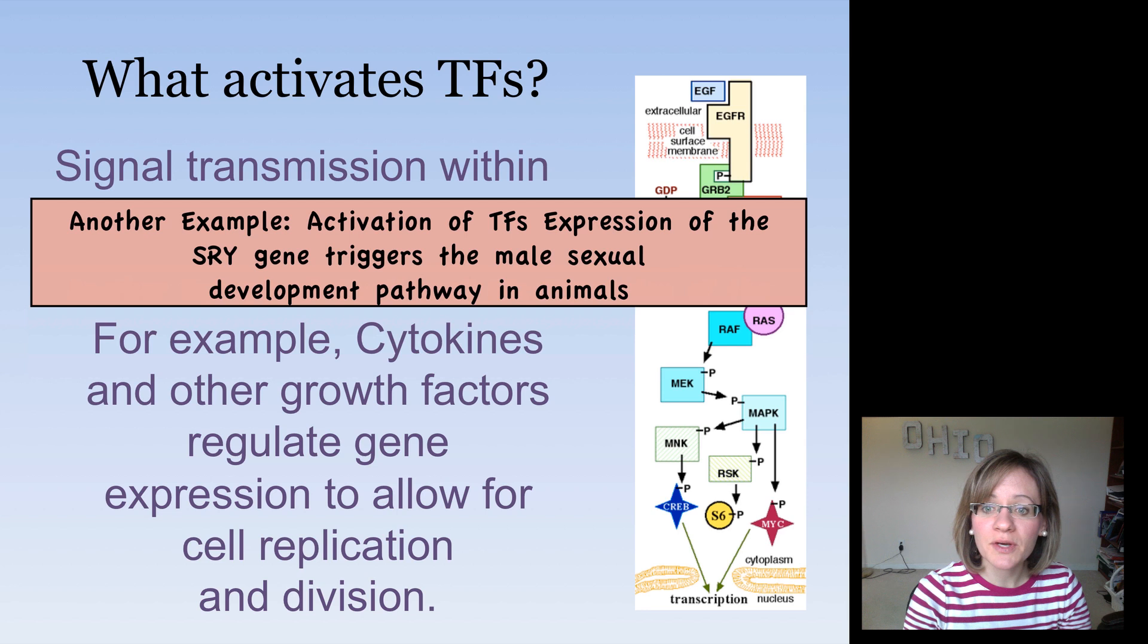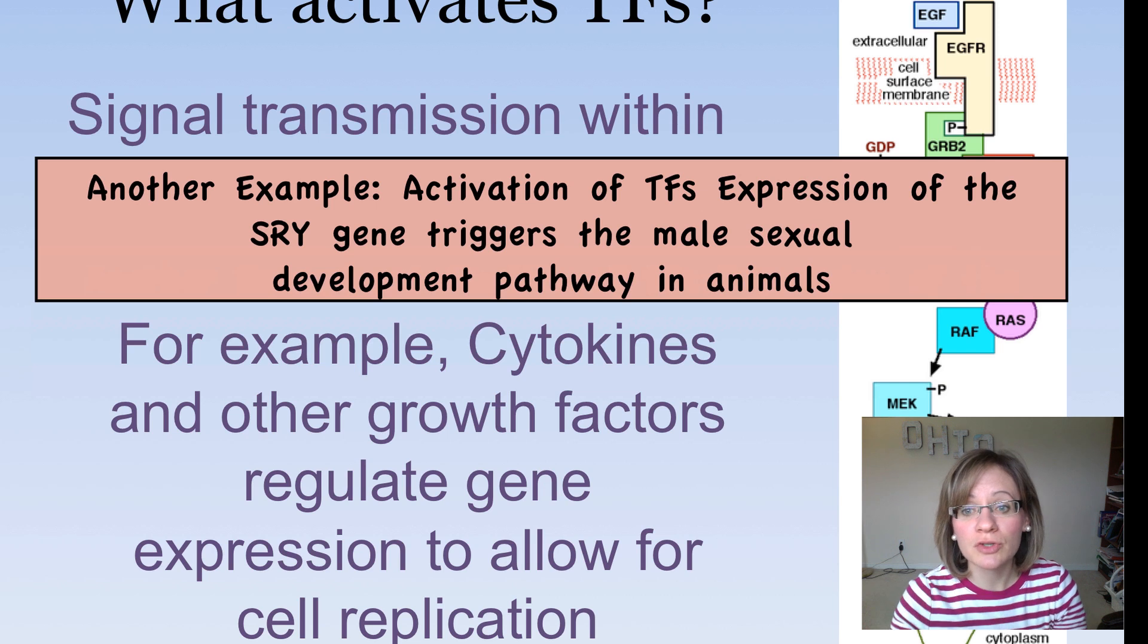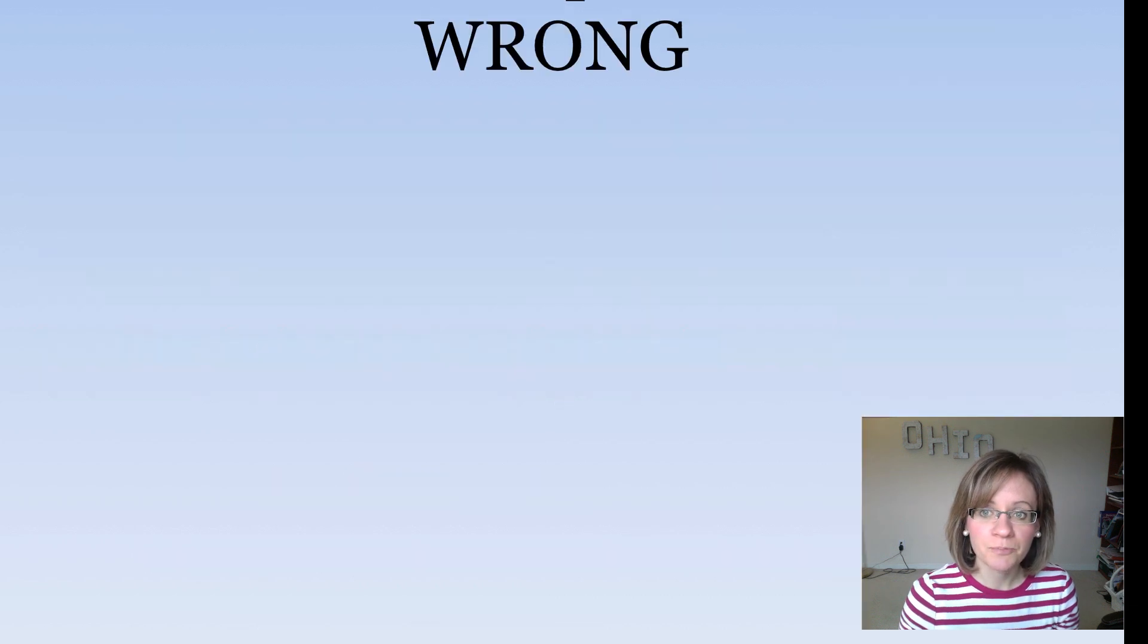So that's one example. Another example is the activation of transcription factors of the SRY gene. Remember we learned with the sex-linked genetics that the SRY gene is on the Y chromosome. It's one of the only genes on there. And this is then going to trigger another similar pathway to promote male sexual development pathway in animals.